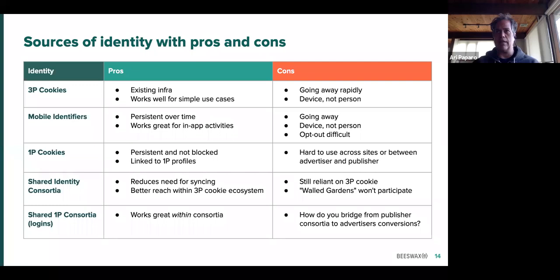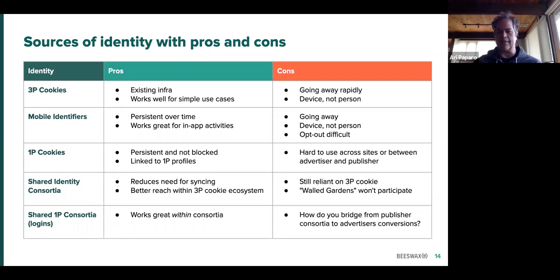First-party cookies are an area where there's a lot of activity and a lot of entrepreneurial startups working on this. They're persistent — that's great. They're not blocked — that's great. You can link them to first-party profiles if you're a publisher. But as soon as you start trying to use them as an advertiser across sites, you have a problem because they're first-party — they don't work across sites. So there have to be bridging mechanisms, and that's where a lot of the entrepreneurial activity is taking place.